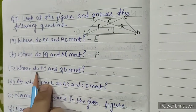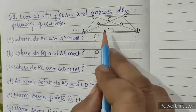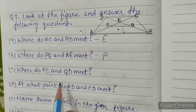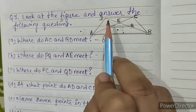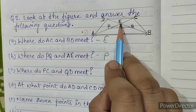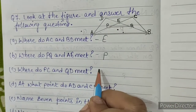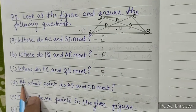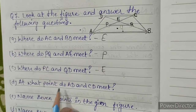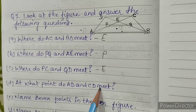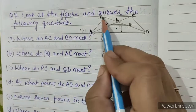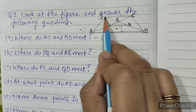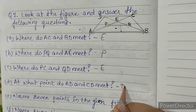C: where do PC and QD meet? PC and QD meet at point E. D: at what point do AD and CD meet? AD and CD both meet at point D.